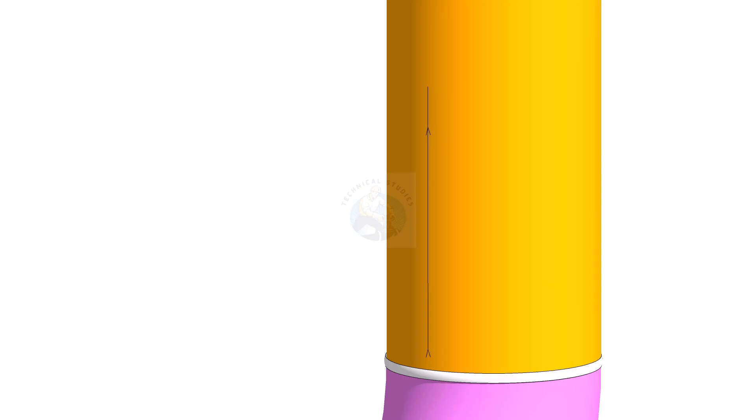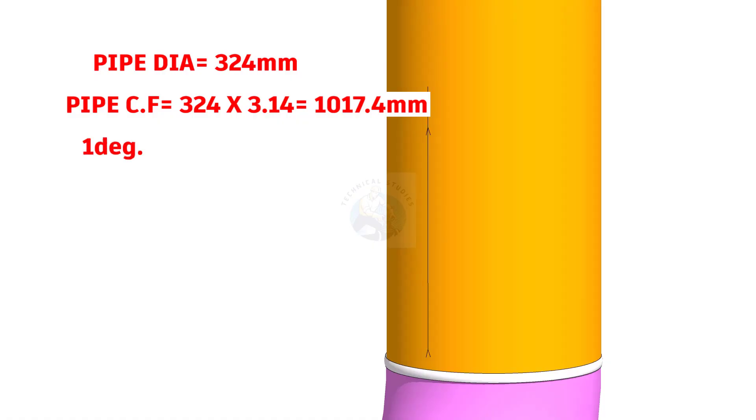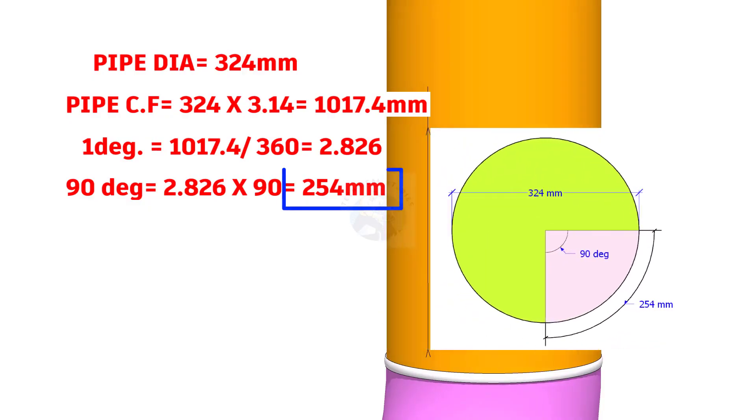As I said earlier, the OD of the pipe is 324mm. Pipe circumference equals 324 multiplied by pi, or 3.142, equals 1017.4mm. 1 degree equals 1017.4 divided by 360 equals 2.826. 90 degree equals 2.826 multiplied by 90 equals 254mm. This is the arc length for 90 degree in a 324mm diameter circle.